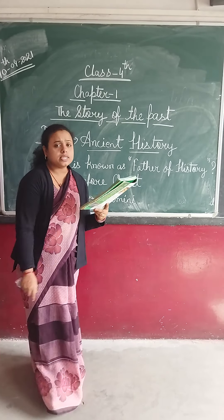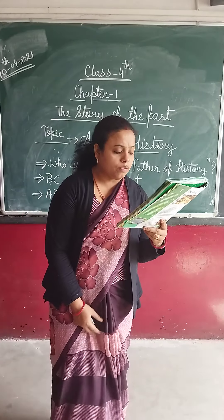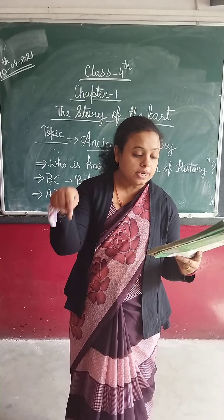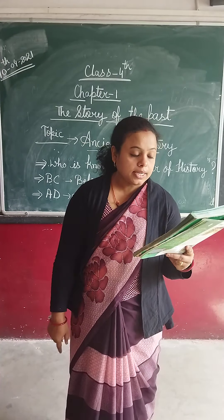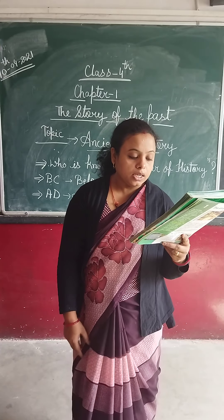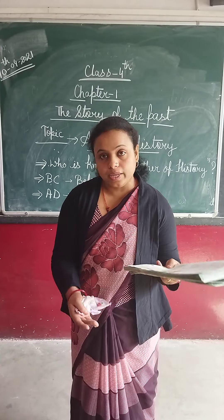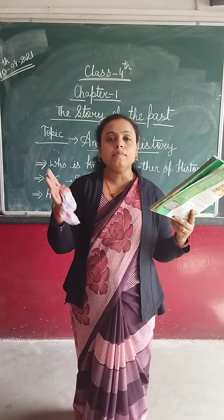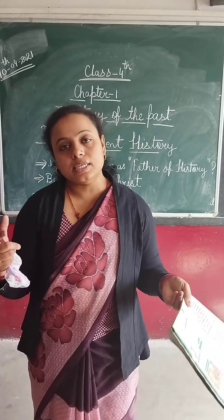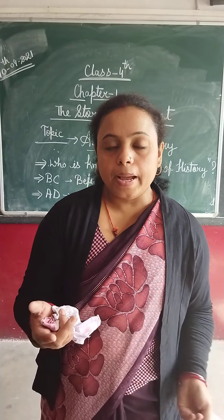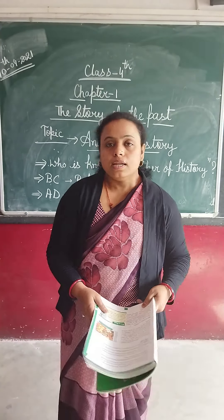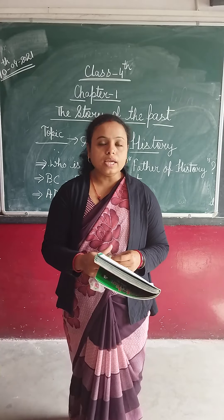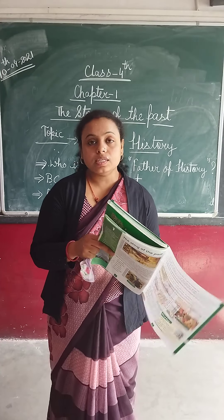History is a series of events that happened over a period of time, from the beginning of human civilization till today. It is impossible to study complete history together. Therefore, the historians divided history into three main parts: the first part is ancient history, the second part is medieval history, and the last part is modern history. Today we will discuss about ancient history.